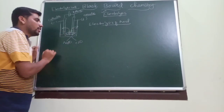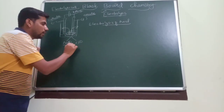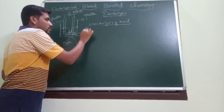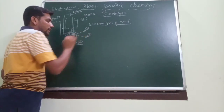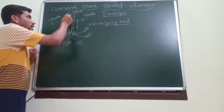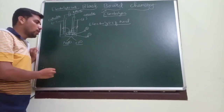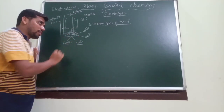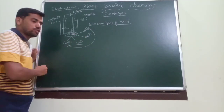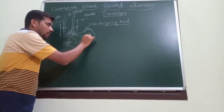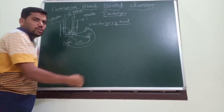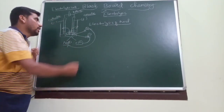If we have NaCl in solution: Na+ and Cl- are present. NaCl dissociates, and water gives H+ and OH-. So in solution we have Na+, H+ as positive charged particles, and Cl- and OH- as negative charged particles - two positive and two negative charged particles are present when electric current passes through the solution.